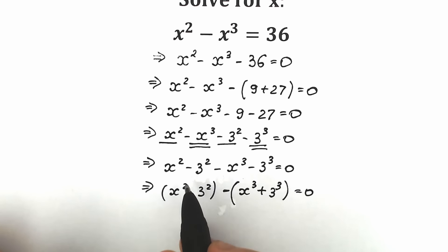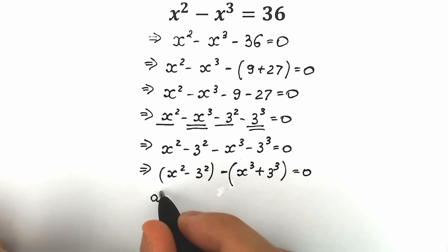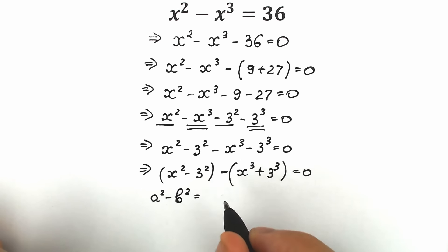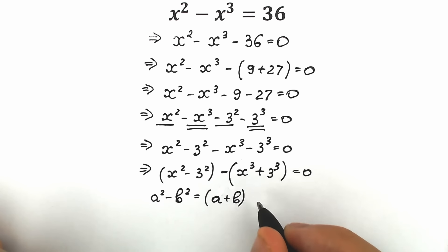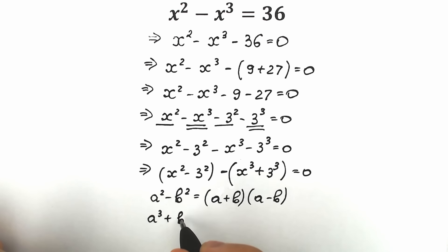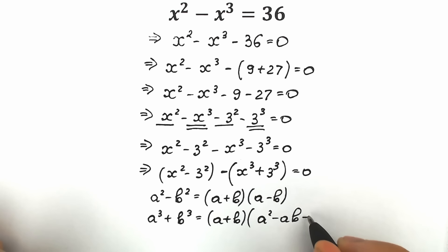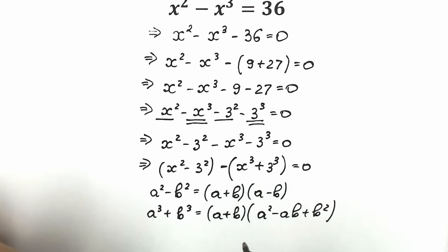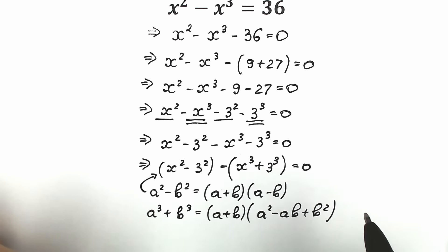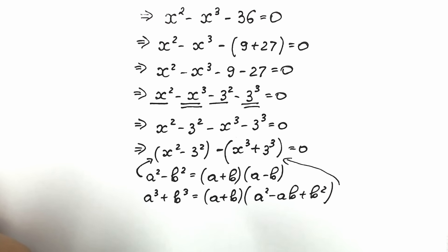If we look closely, in the first parentheses we have a difference of squares. We can remember the formula: a squared minus b squared equals a plus b times a minus b. And for the second parentheses we have a sum of cubes. The formula is: a cubed plus b cubed equals a plus b times a squared minus ab plus b squared.